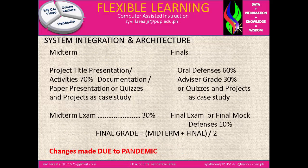Now let's move on to the grading system. Under midterm, we have project title presentation and activities at 70%, with documentation, paper presentation or quizzes, and projects as case study. Then the midterm exam at 30% — totaling 100%. For the final period, we have oral defenses at 60%, advisor grade at 30%, and quizzes and projects as case study. The final exam or final mock defense is 10%. The total grade is midterm plus final divided by 2 as the final grade. Changes were made due to the pandemic.